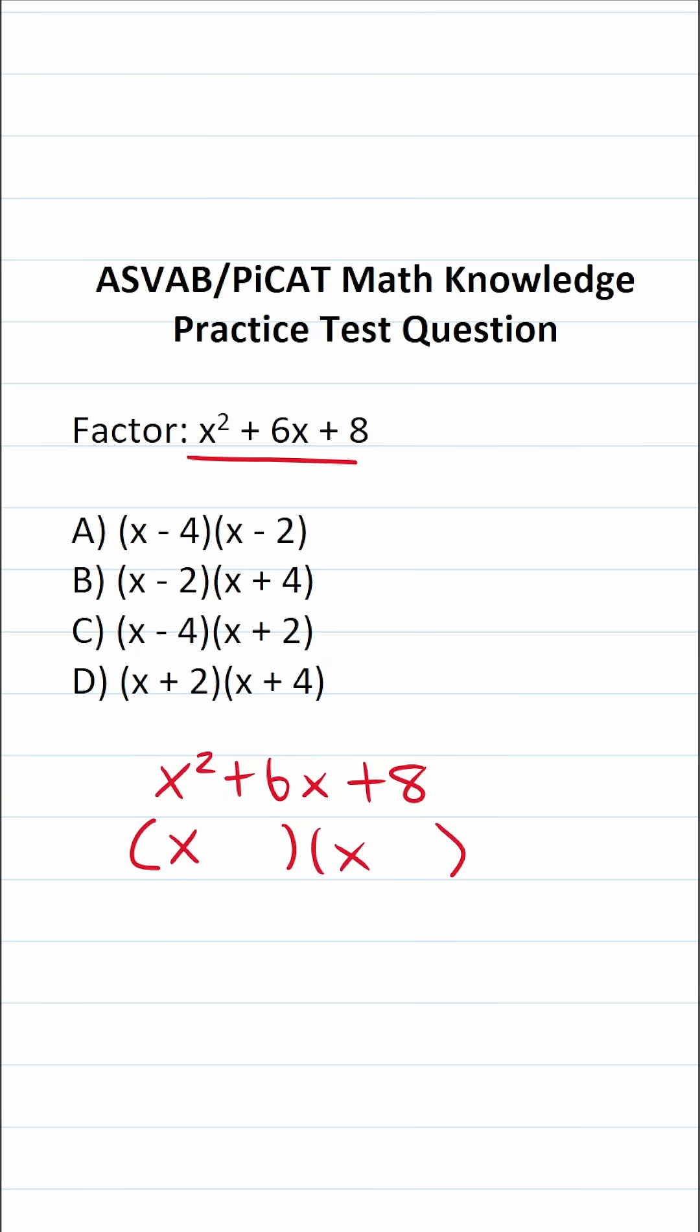The only other thing we have to determine is two numbers that multiply to positive eight and add to positive six. Let's think about that for a second. Four times two is eight, four plus two is positive six. So those are going to be our two numbers.